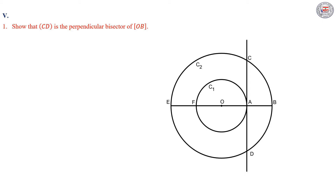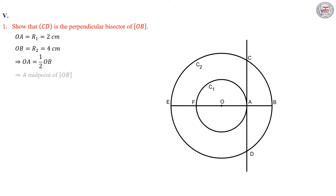In order to prove that we have a perpendicular bisector, one of the methods is to prove that we have a perpendicular passing through the midpoint of a segment, and this perpendicular would be the perpendicular bisector. OA equal R1 equal 2 cm, and OB equal R2 equal 4 cm. That means OA is equal to half OB, and in this case A is the midpoint of the segment OB.